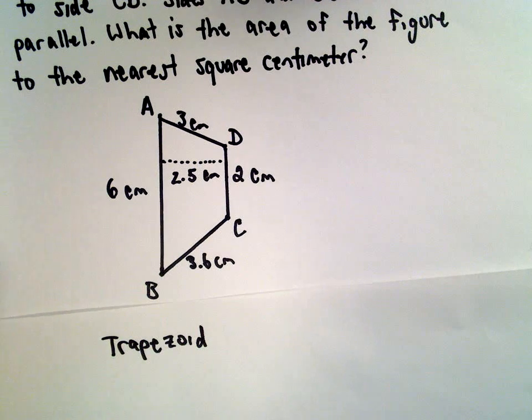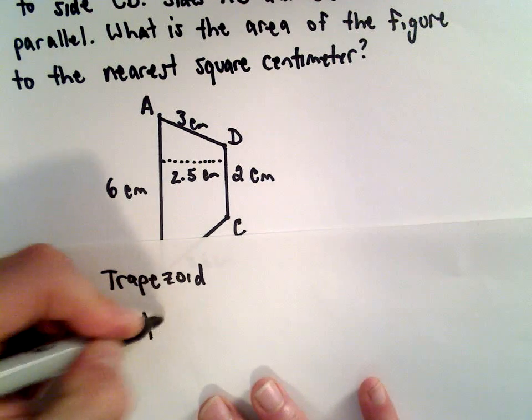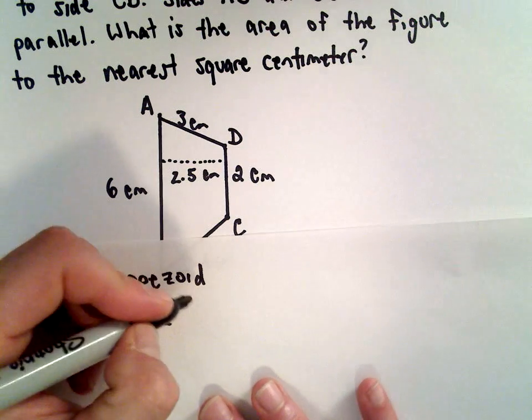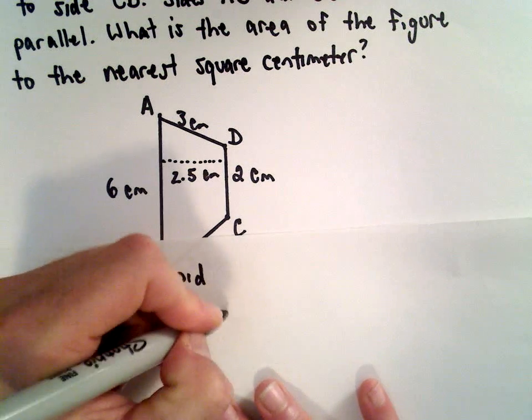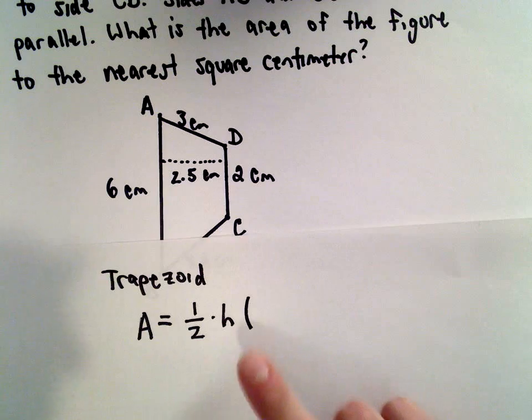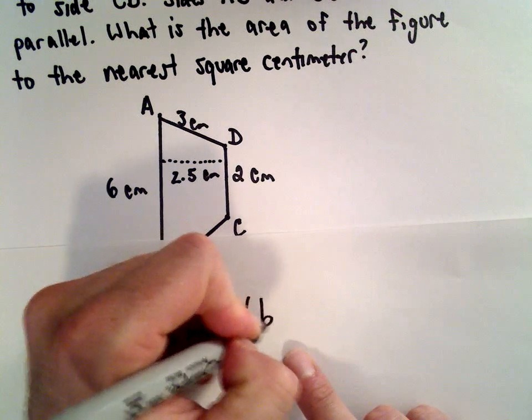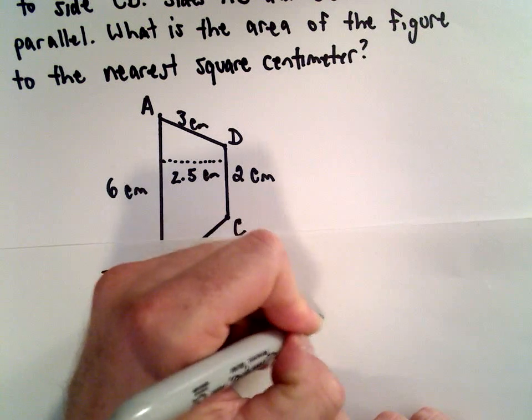And this will be given to you on your formula sheet. And the area of a trapezoid, we take one half of the height. And then we multiply that by the quantity. We take base one plus base two.